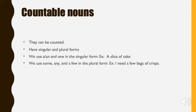We're going to start with countable nouns. These are the characteristics of countable nouns. First, they can be counted. They have singular and plural forms, and we use a, an, and one in the singular form, for example, a slice of cake. And we use some, any, and a few in the plural form. For example, I need a few bags of crisps.